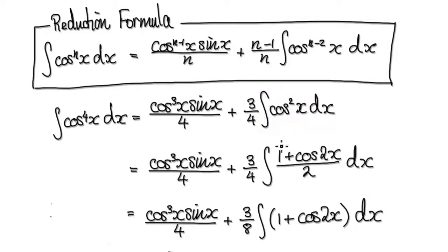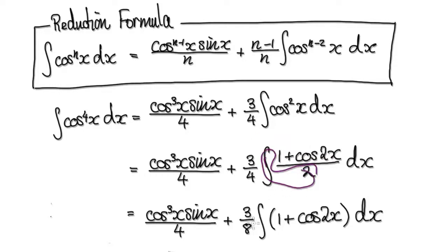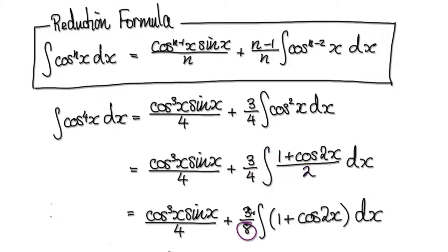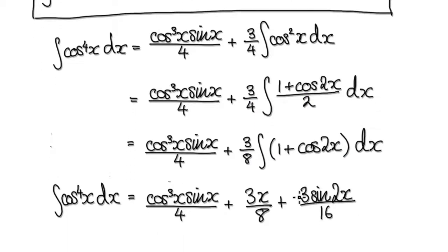So now, factor out the half. That will then give you this 2 here, which will then give you 8. So that will then give you 8, and then it becomes this. Then integrate it — if you integrate cos⁴x, it will give you this whole thing here.